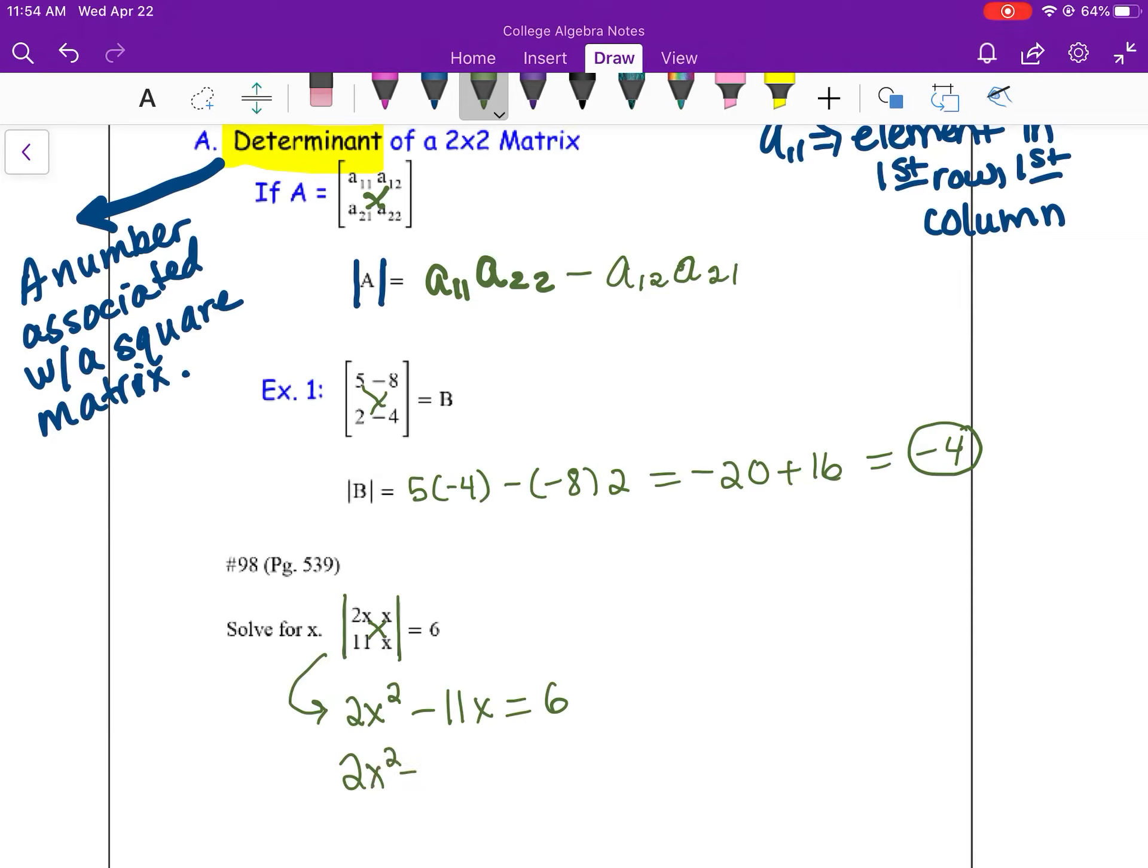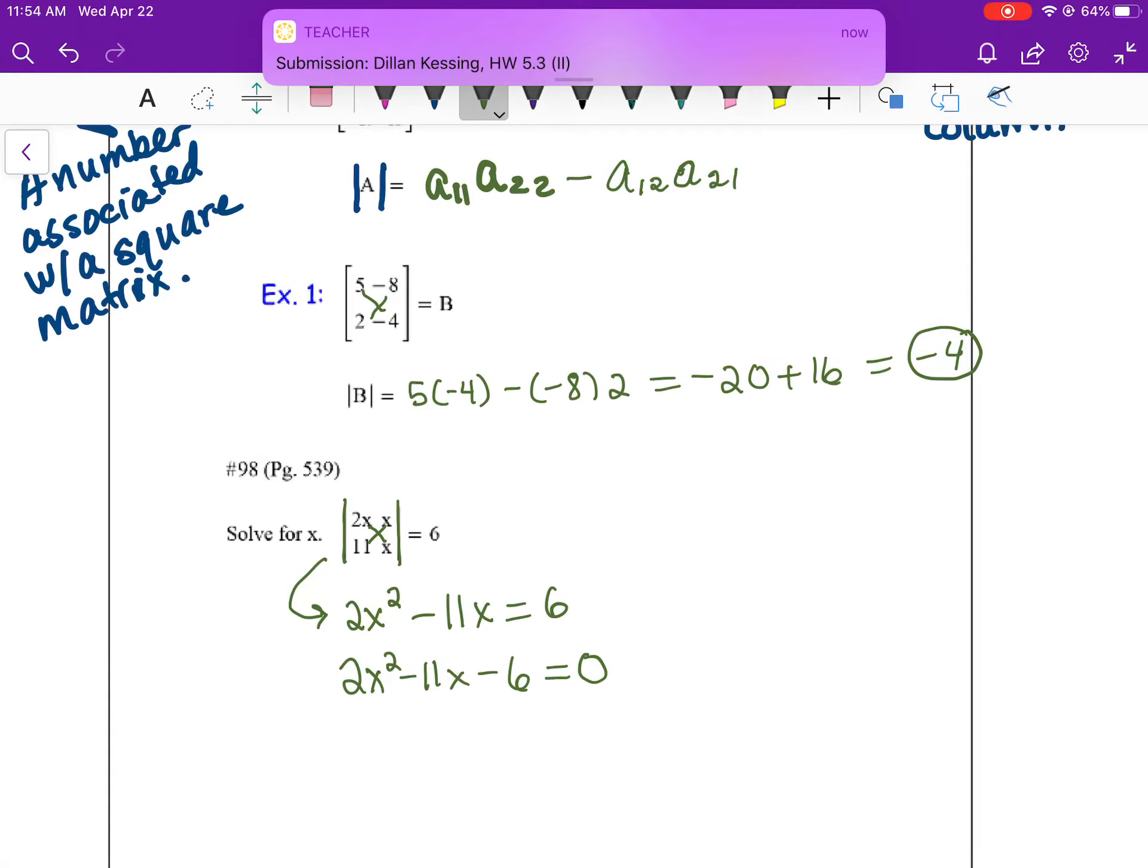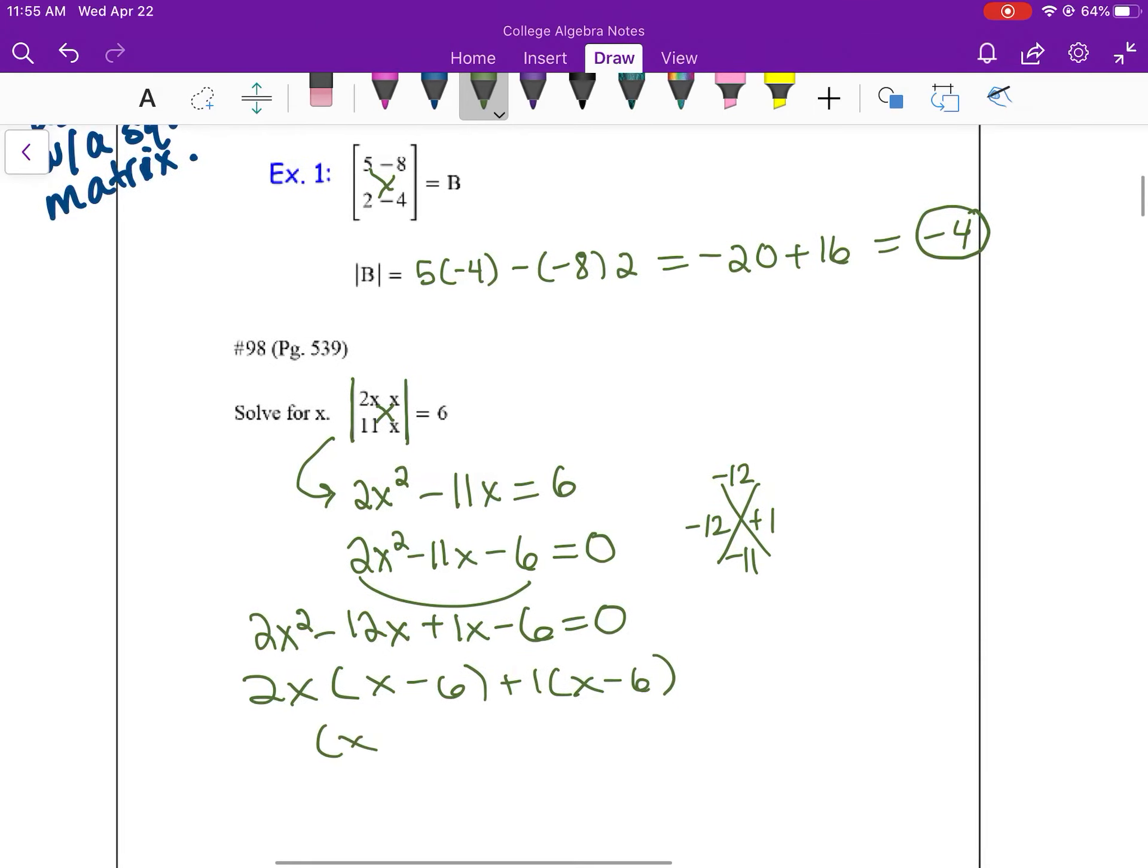You more than likely have done work like this in Algebra 2. In our curriculum, this is the only lesson we have to do with matrices. From here, I'm going to factor this. So factors of negative 12 that add to negative 11 would be negative 12 and 1. And we get two answers, negative 1 half and 6.